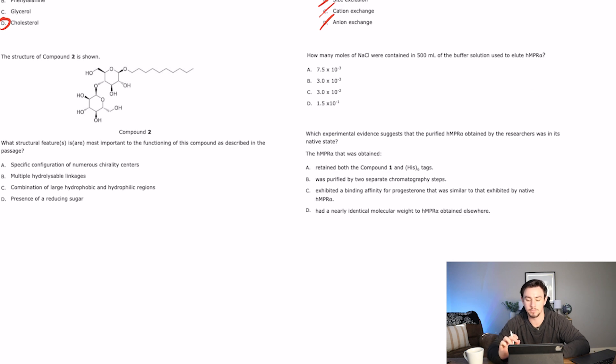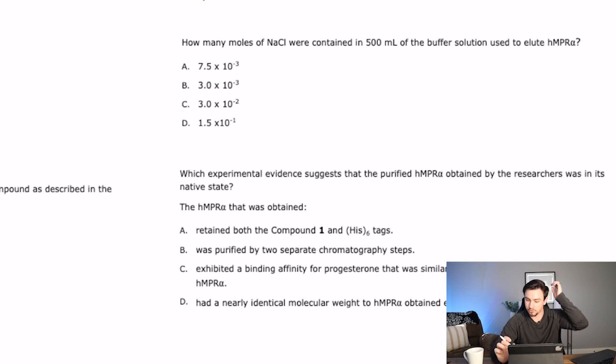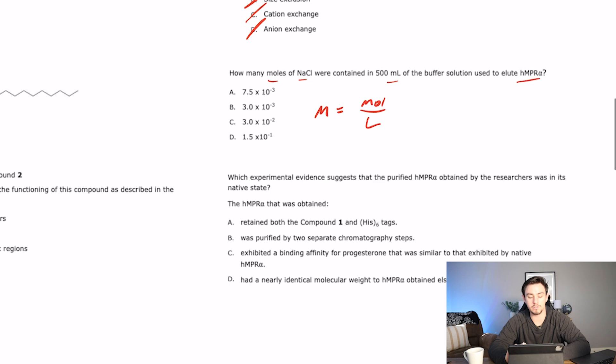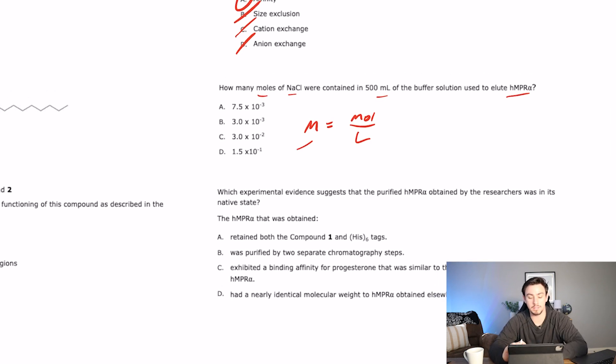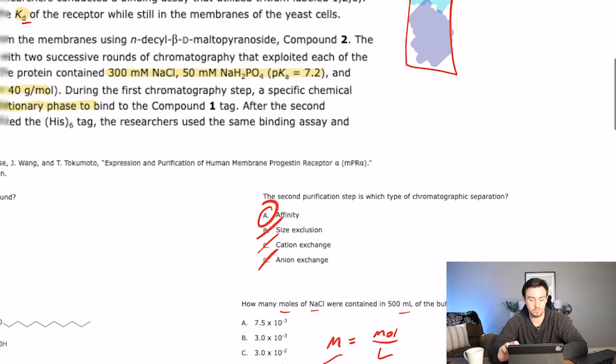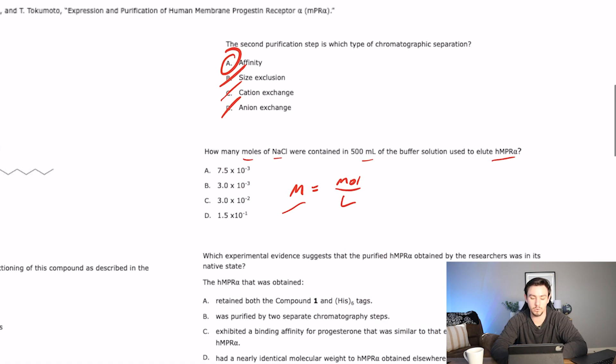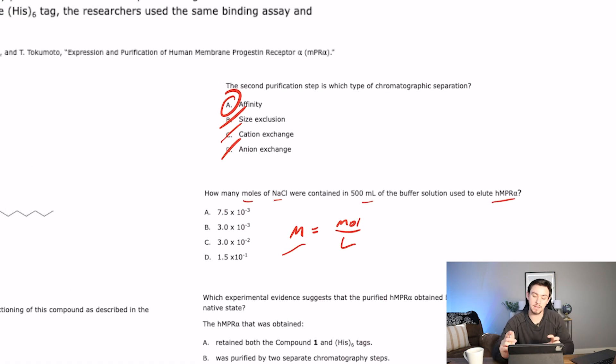And then number 23 says, How many moles of sodium chloride were obtained in half a liter of the buffer solution used to elute HMPR alpha? So we're talking about moles of sodium chloride and we're given liters. So what does that make you think of? Well, it makes me think of molarity is equal to moles per liter. So let's go back up to the passage and see if we have molarity.